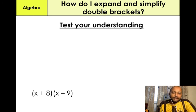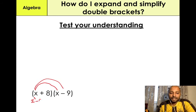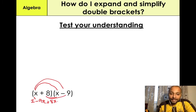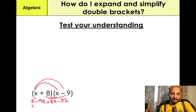(x + 8)(x − 9). Expand the brackets — always first: X times X, which is X squared. X times minus 9, which is minus 9X. Then 8 times X, which gives us positive 8X. And 8 times minus 9, which gives us minus 72. Simplifying: minus 9X plus 8X gives us minus 1X. So X squared minus X minus 72 — that's our final answer.